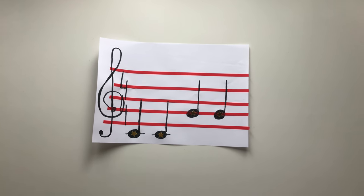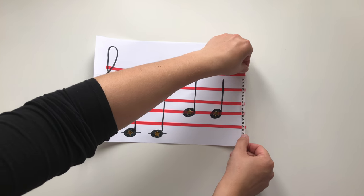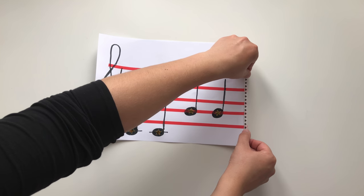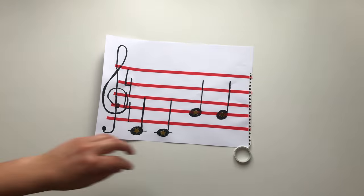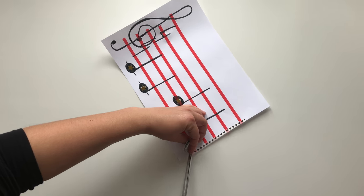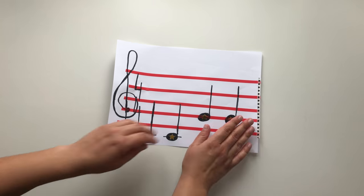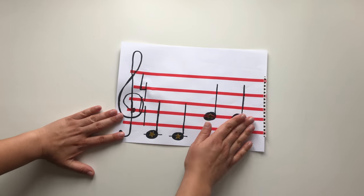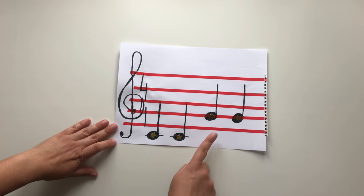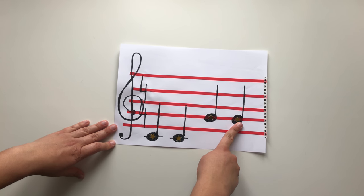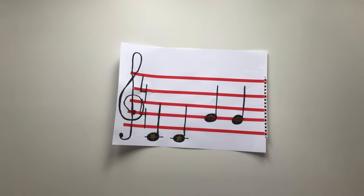We have the first bar of Twinkle Twinkle Little Star song. At the end of the bar, we have to paste a bar line, which separates each bar from each other. So we have C, C, G, G.